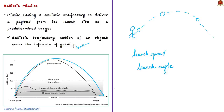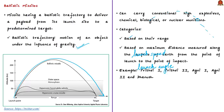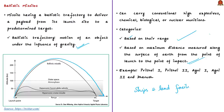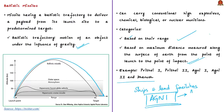Ballistic missiles have several categories based on their range — the maximum distance along the earth's surface from launch point to point of impact. They can be launched from ships and land-based facilities. Examples from India include Prithvi-1, Prithvi-2, and Dhanush — all ballistic missiles. The Agni class of missiles, the centerpiece of India's nuclear launch capability (Agni-1 to Agni-5), belongs to the family of medium to intercontinental range ballistic missiles.